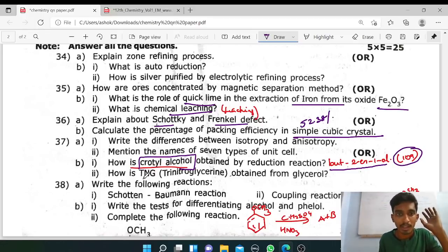Next, TNT, so TNT is glycerol nitration reaction. Maybe solid state. Next, Schotten-Baumann reaction, coupling reaction, these are naming reactions, five marks, easy.